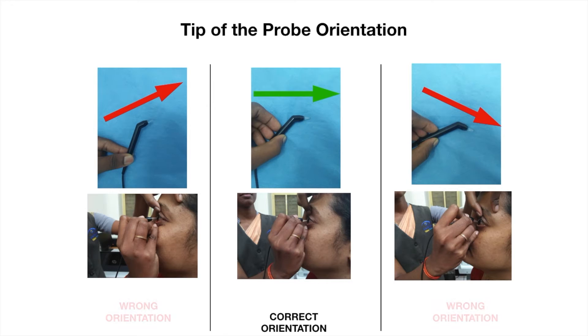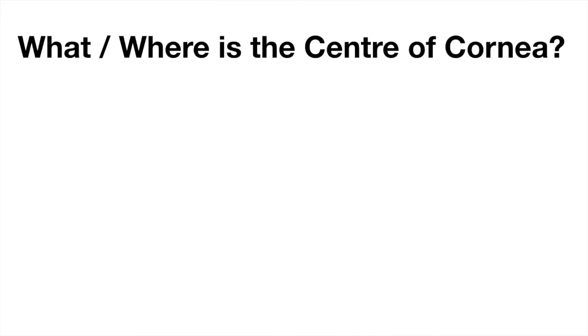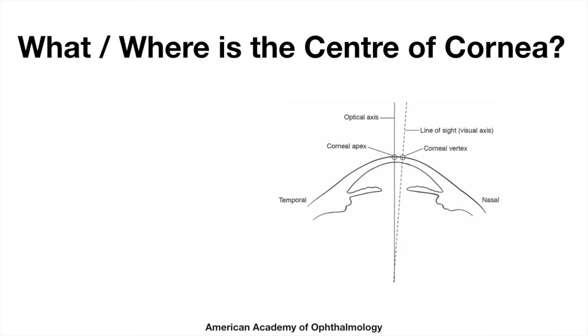There is, however, only one correct probe position. Coming back to what is the center in CCT, we have two different centers: the corneal vertex and the apex.